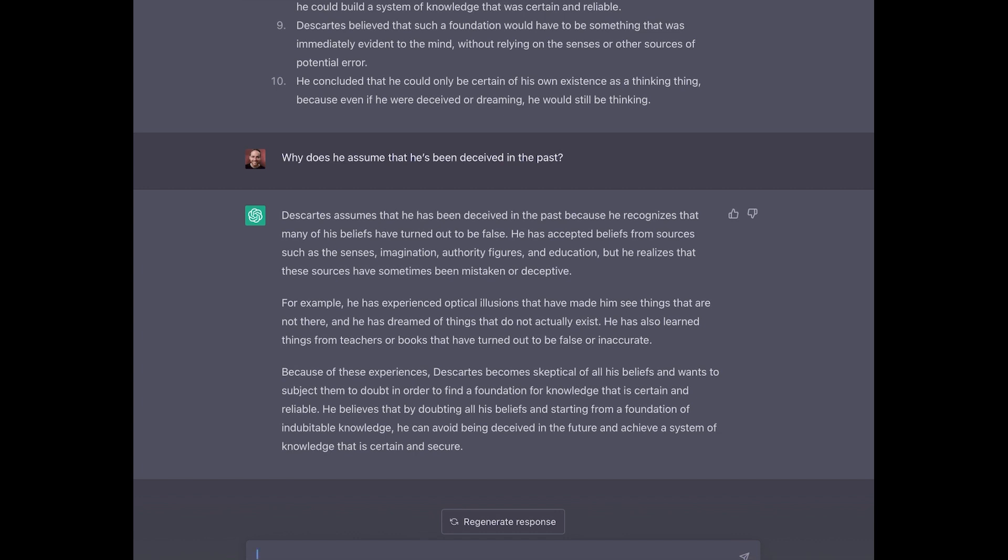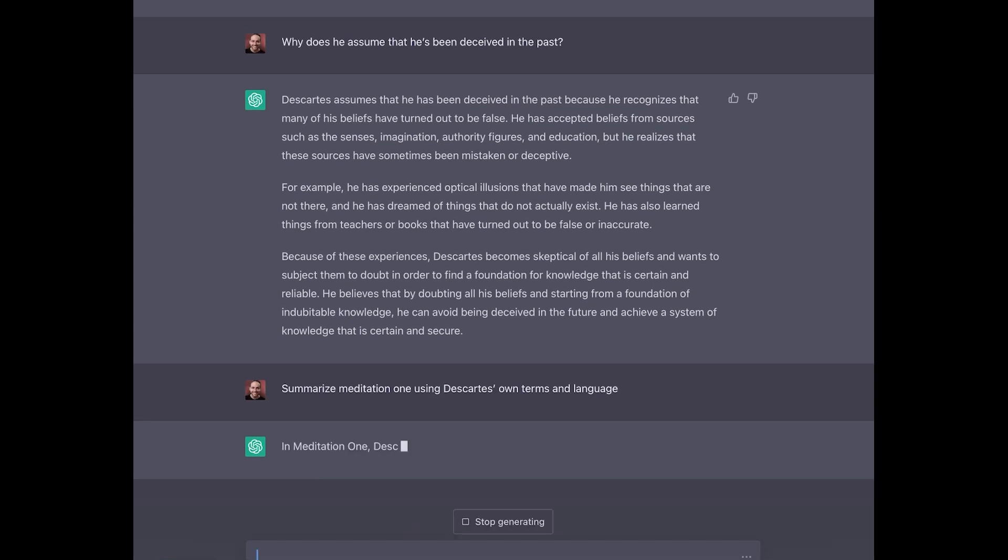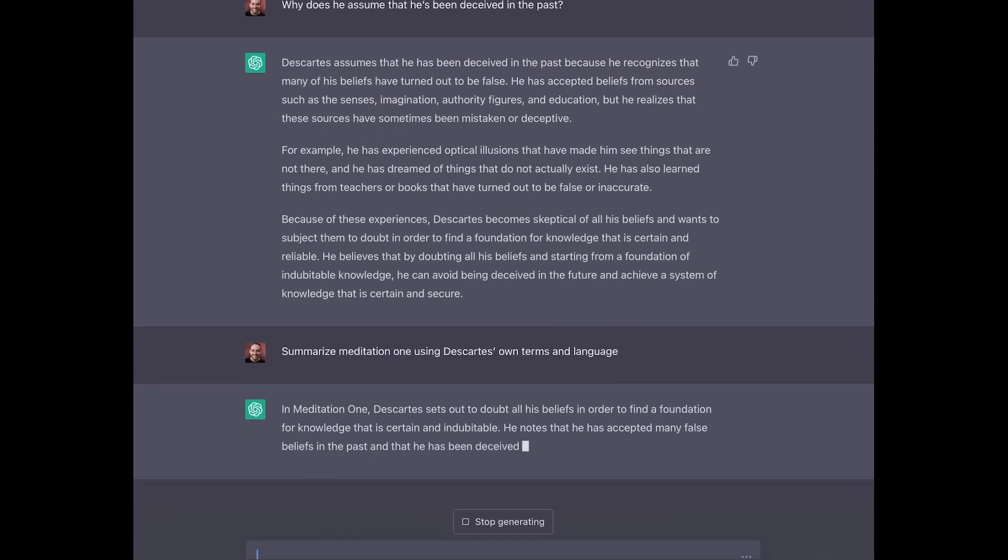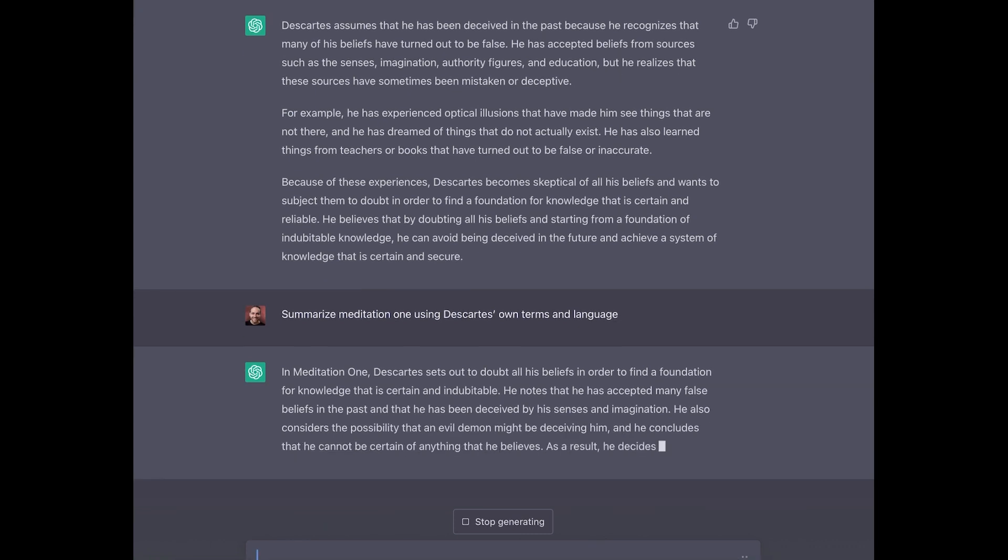So this is the sort of peeling back the onion that I'm suggesting that we should do here. And so now I might say, okay, I understand what's going on here as an outline in meditation one. Now I want you to further this and prepare me for reading the real thing by summarize meditation one using Descartes' own terms. Basically his language, his philosophical jargon. Yeah, and so we're starting to get little changes now. So things that are certain, indubitable, and that's more of a common way of speaking about this.